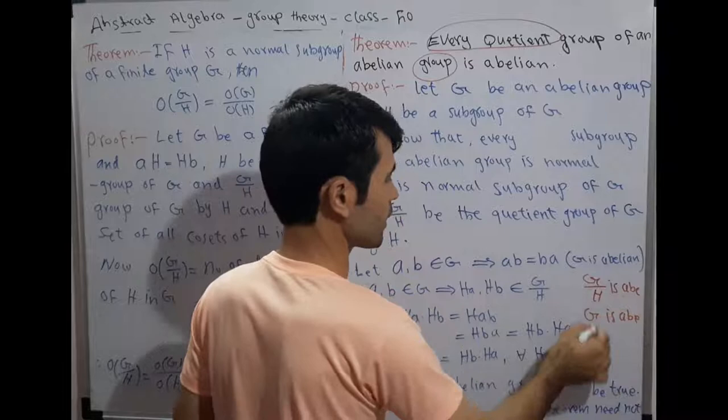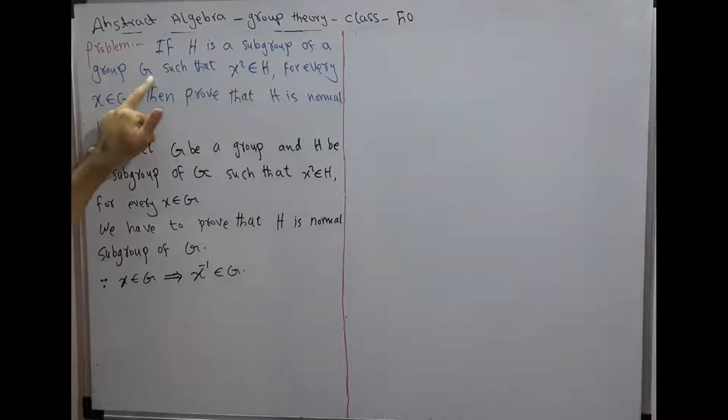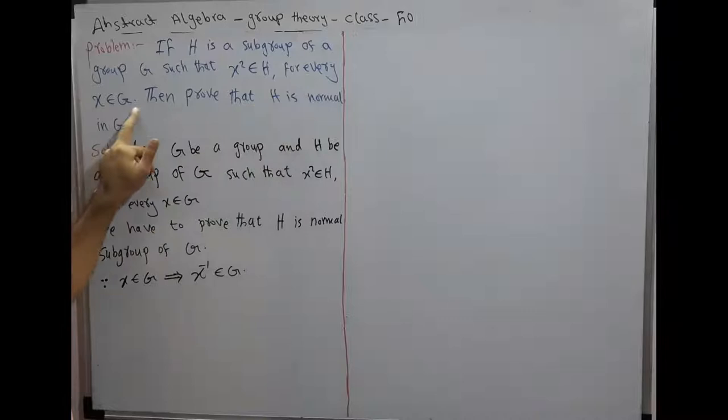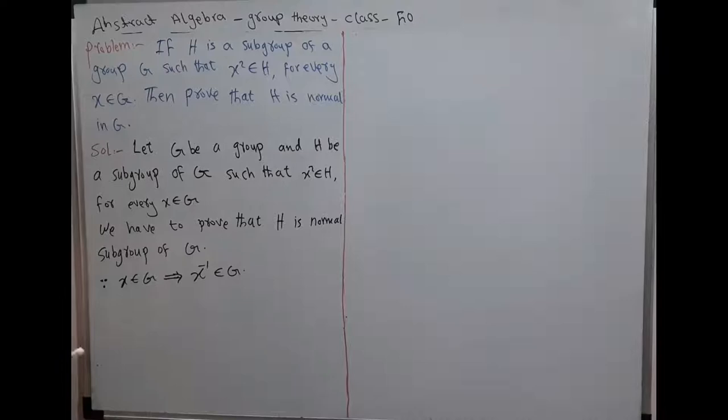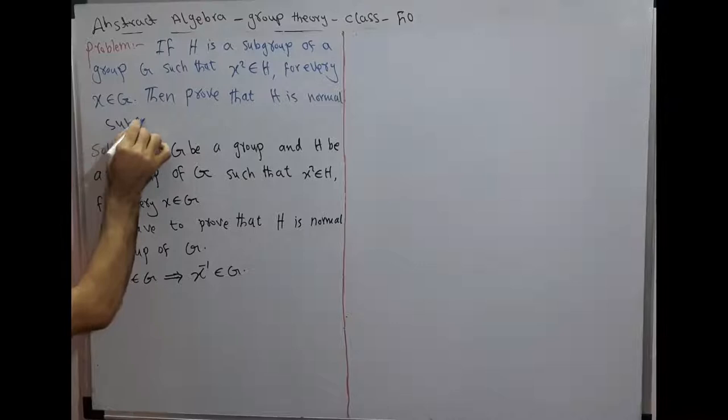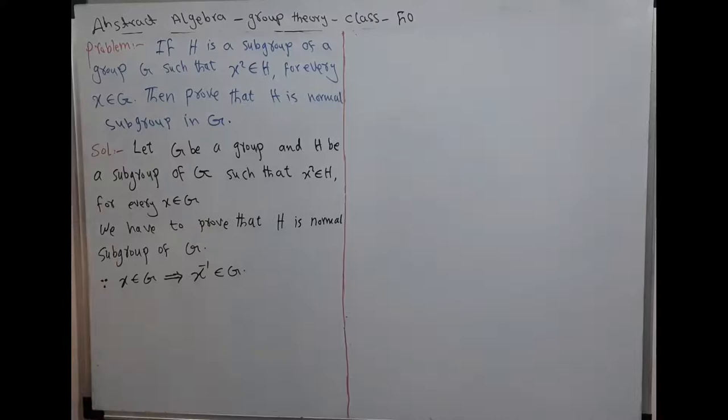Problem: If H is a subgroup of a group G such that x squared belongs to H for every x belonging to G, then prove that H is a normal subgroup of G. Let G be a group and H be a subgroup of G such that x squared belongs to H for every x belonging to G.